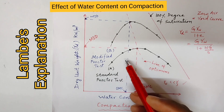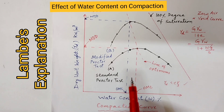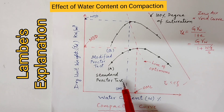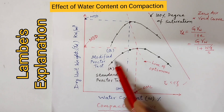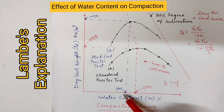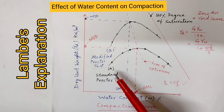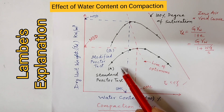As the water content is increased, the double layer expands and the inter-particle repulsive forces increase. The particles easily slide over one another and get packed more closely, resulting in a higher dry unit weight. The double layer expansion is complete at the optimum moisture content, which is why the dry unit weight is maximum at that stage. Beyond the OMC, the addition of water does not add any further expansion of the double layer, but the water tends to occupy space which would otherwise be occupied by soil grains, hence a decrease in dry unit weight.